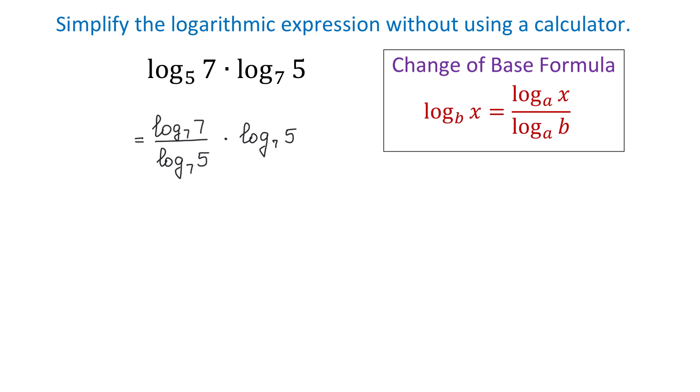Then log base 7 of 5 will cancel, and we will be left with log base 7 of 7. Now, 7 to what power equals 7? That would be 1, so the answer is 1. Thank you for watching, and please subscribe and come back for more videos.